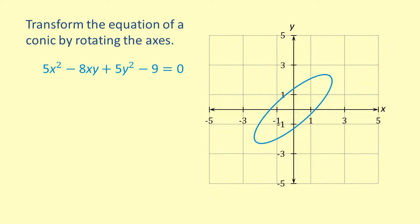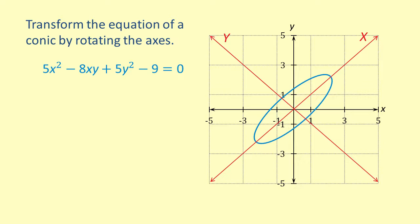The equation 5x squared minus 8xy plus 5y squared minus 9 equals 0 represents this ellipse. A new coordinate system could be introduced that has the same origin but an XY coordinate system that is also rotated 45 degrees counterclockwise. In this coordinate system, the rotated ellipse has a major axis on the new X axis and a minor axis on the new Y axis.